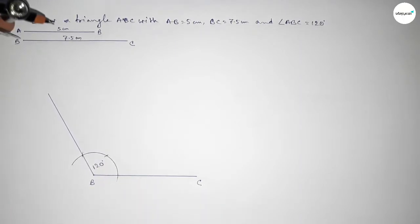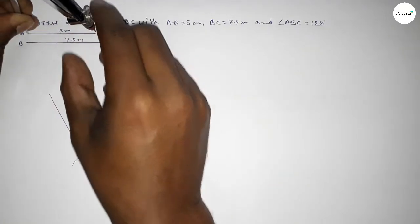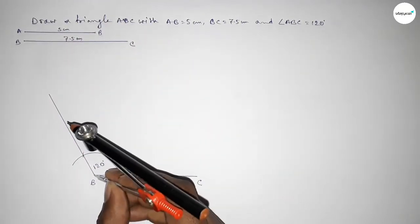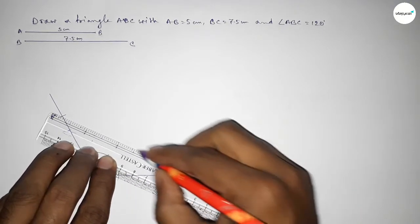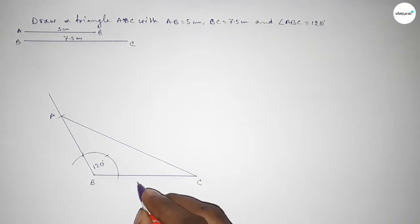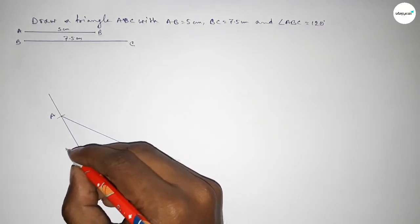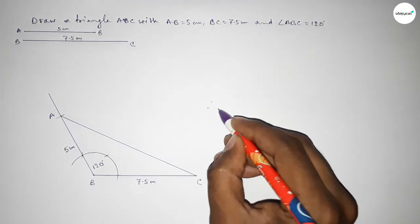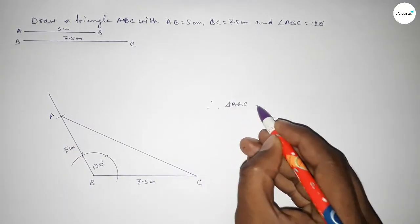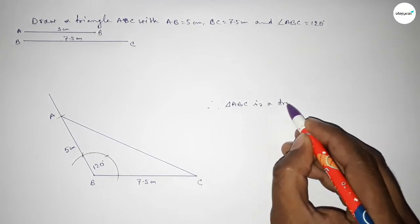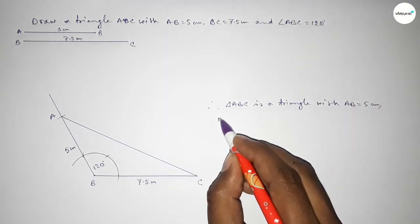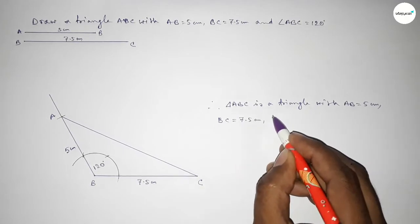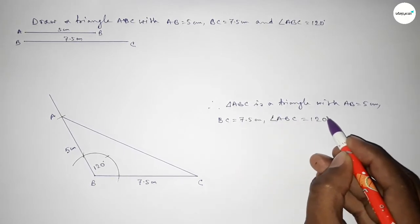Now taking the length AB equal to 5 centimeter using the compass, putting the compass on point B and cutting here to get point A. Next joining A and C to complete triangle ABC. This side is 7.5 centimeter and this side is 5 centimeter. Therefore triangle ABC has AB equal to 5 centimeter, BC equal to 7.5 centimeter, and angle ABC equal to 120 degrees.